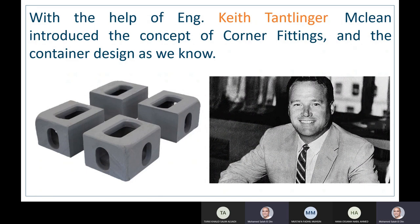There was still a problem: the steel container could move on the ship's deck and wasn't fixed. With the help of engineer Keith Tantlinger, McLean introduced the concept of corner fittings. Corner fittings are part of the container we know today — four on top and four on the bottom, totaling eight. These corner fittings can be connected to other containers or fixed to a truck or ship using twist locks. This was a very real and important invention that truly changed the shipping world.